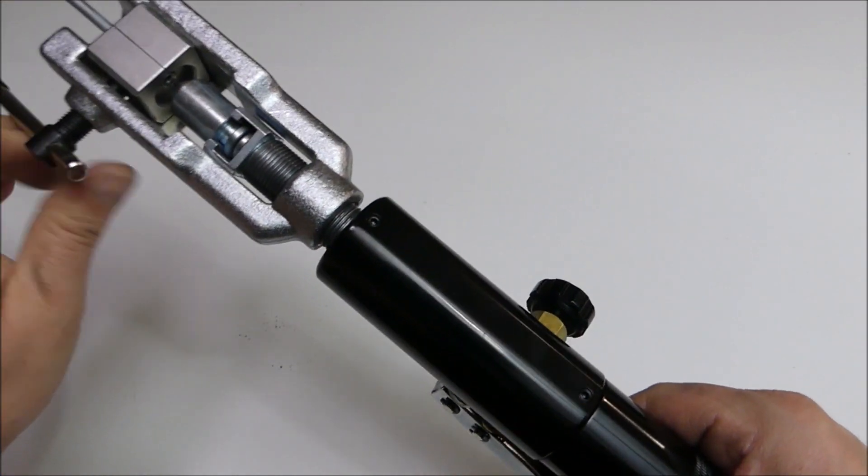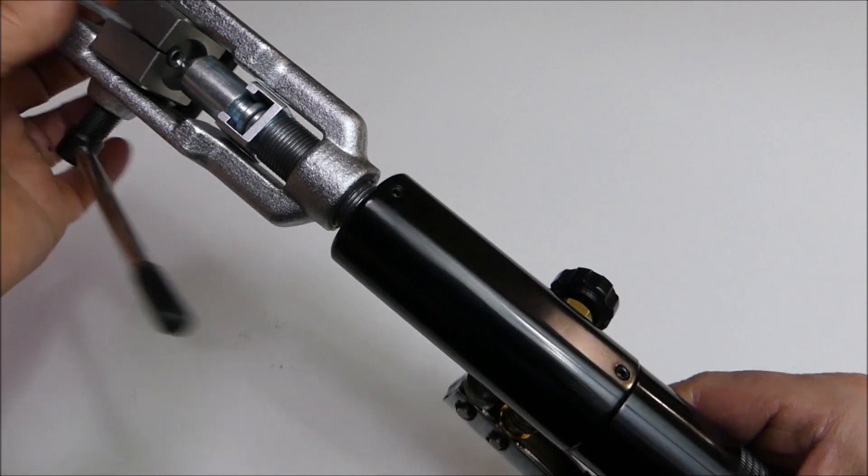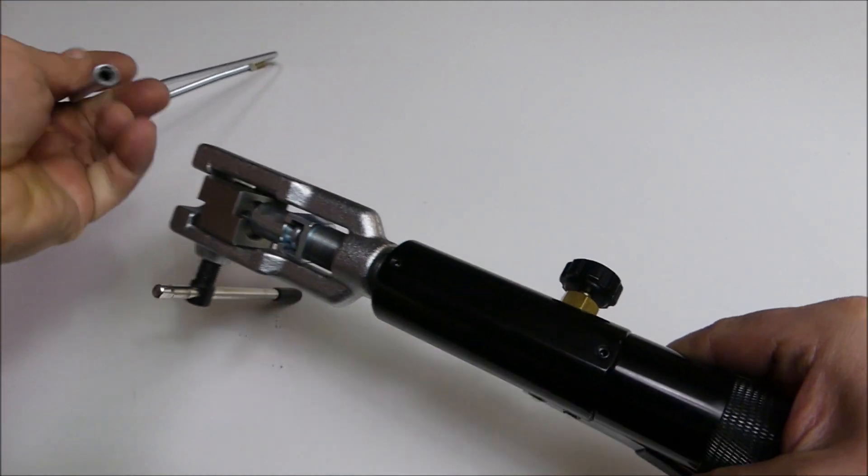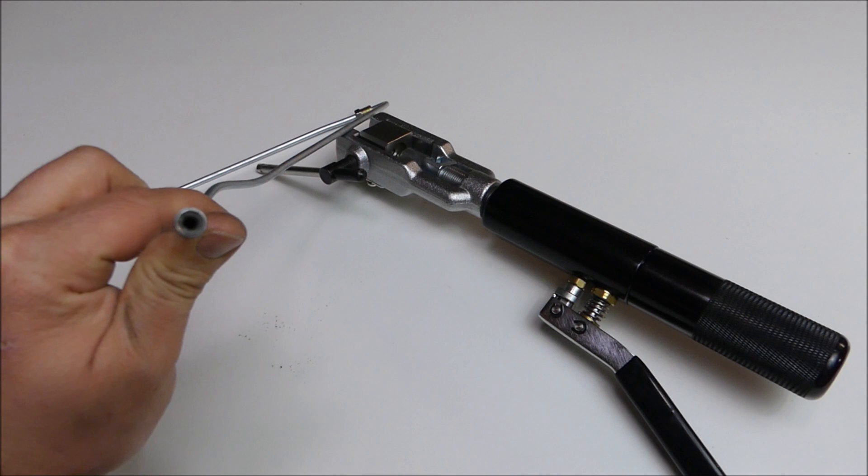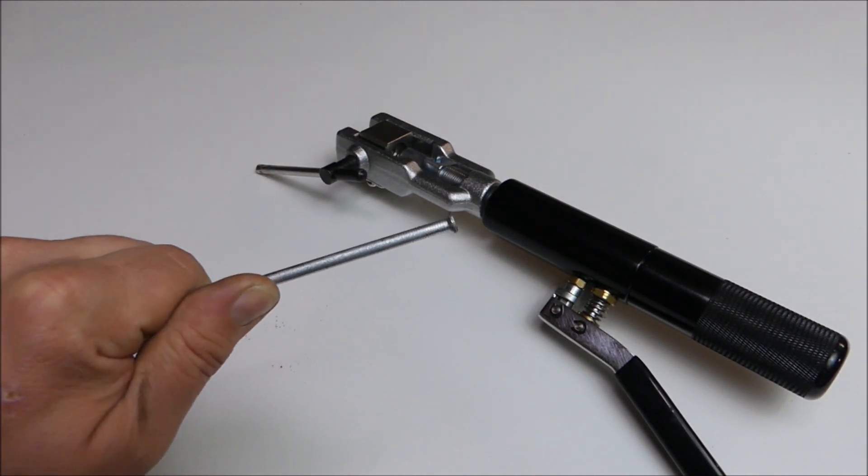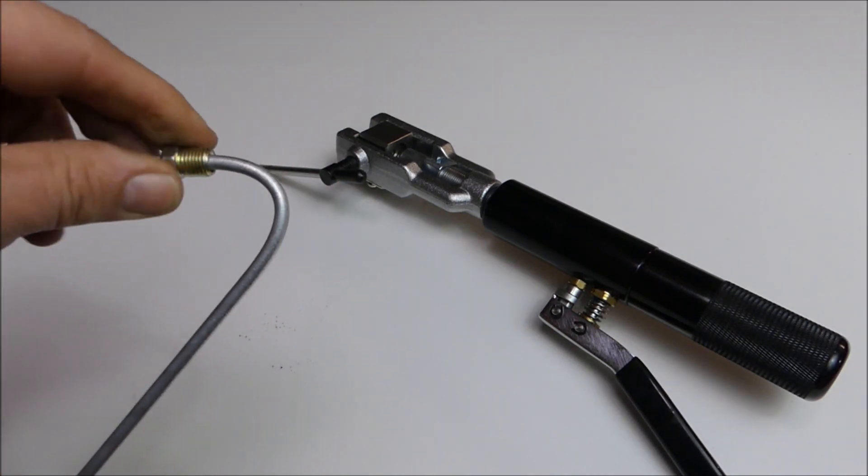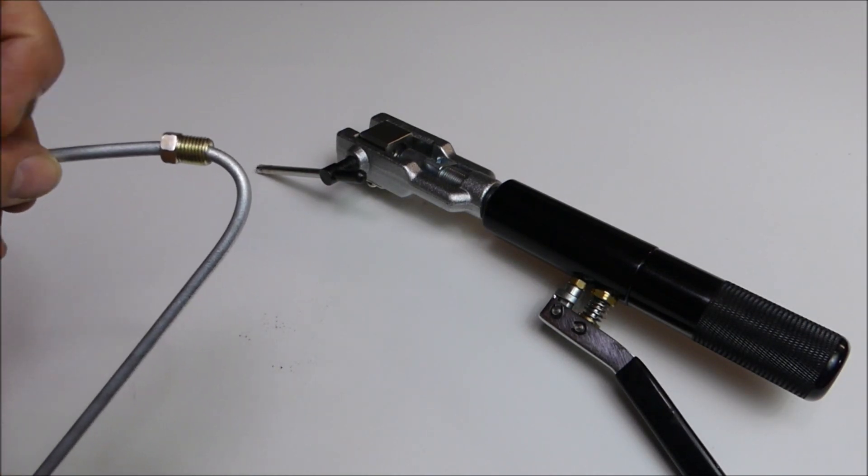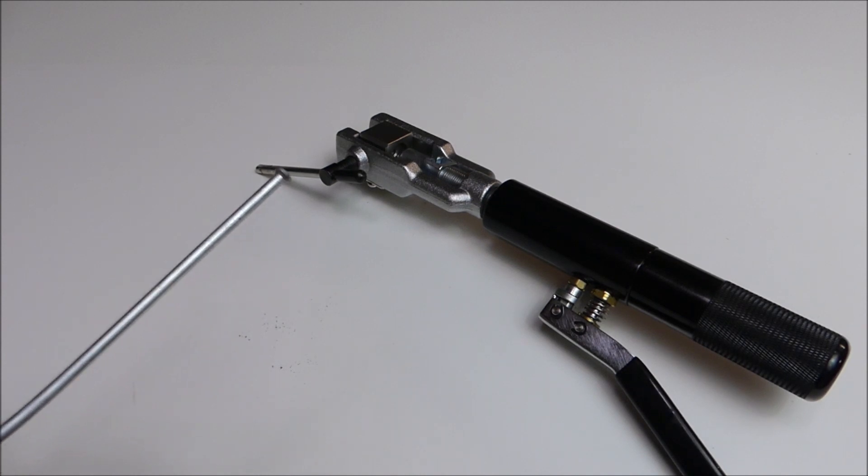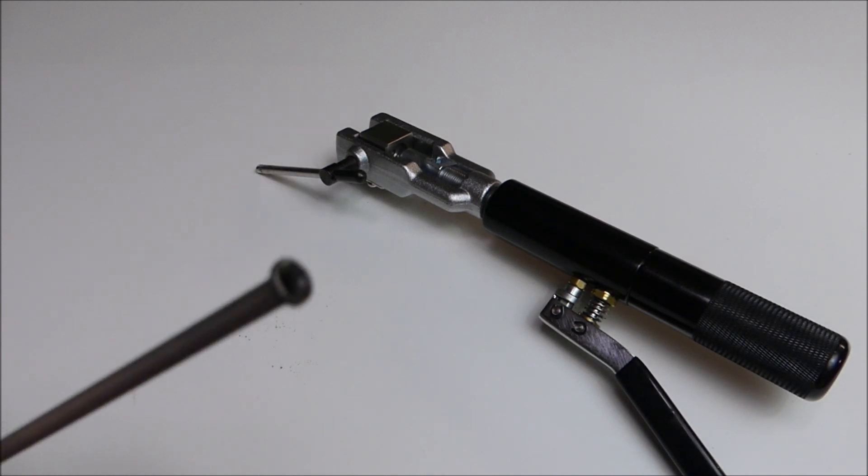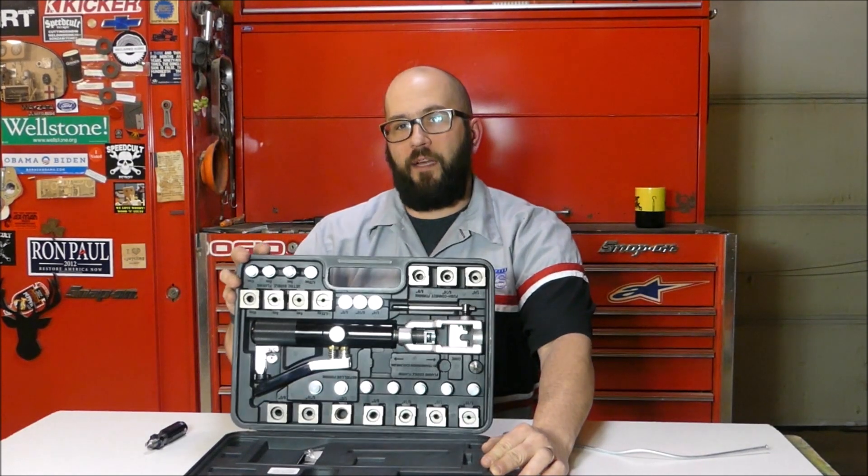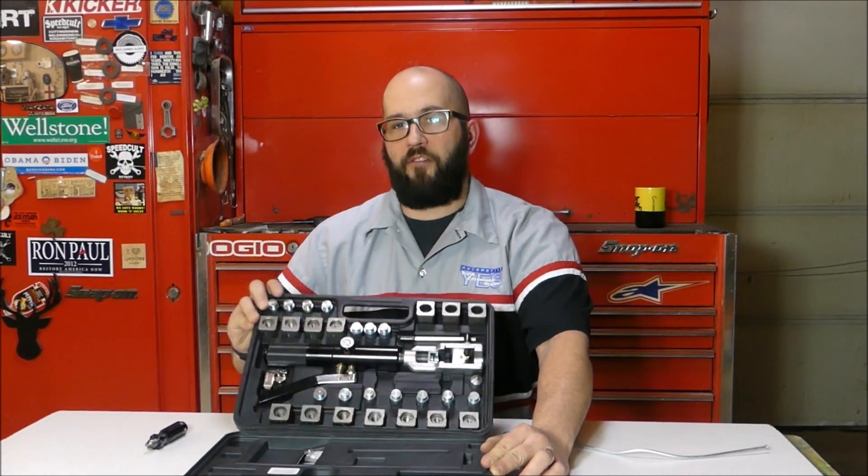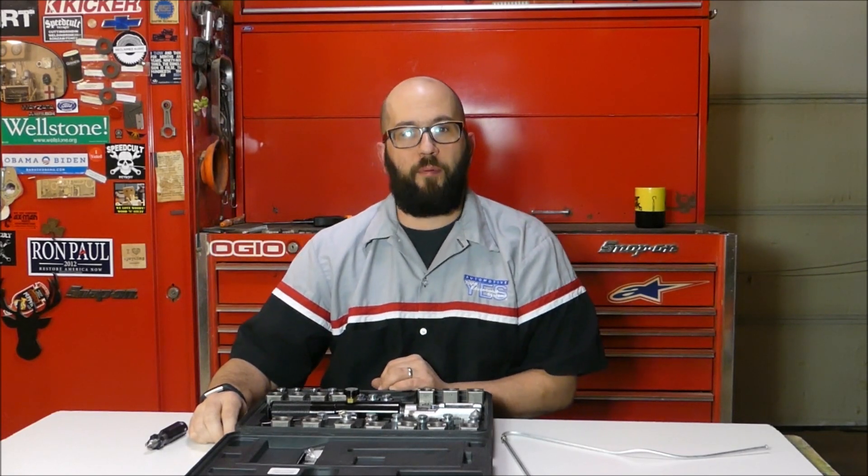Unscrew the handle. Loosen this handle. Now you should have, if everything went according to plan, a good double flare. Make sure you put this nut on the line first, because it's really hard to put it on the line after. But that's all there is to making a double flare. Thank you for watching my demonstration of the Mastercool hydraulic flaring tool. This is by far the best brake flaring tool I've ever used. I highly recommend the product. Thank you for watching, and until next time, peace.